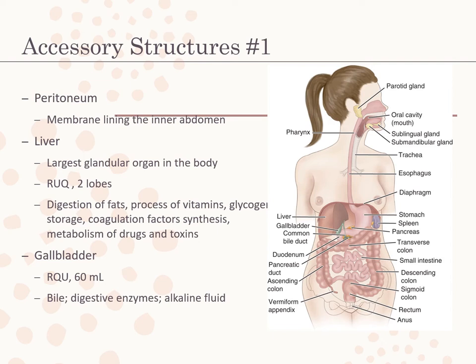The liver is the largest glandular organ in the body, weighing between 1 and 1.5 kilograms, located in the right upper abdomen just under the diaphragm. It forms and releases bile, processes vitamins, proteins, fats, and carbohydrates, stores glycogen, contributes to blood coagulation, metabolizes and biotransforms many chemicals including drugs, bacteria, and foreign matter, and forms antibodies and immunizing substances called gamma globulin.